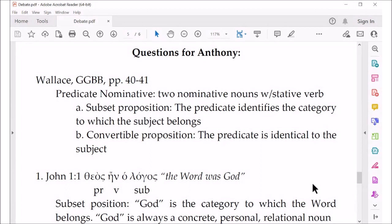So one, the first one he gives is the subset proposition, which is that the predicate identifies the category to which the subject belongs. And the second one is what he calls the convertible proposition, where the predicate is identical to the subject. Would you agree with Wallace that that's basically the two ways that a predicate nominative is used?